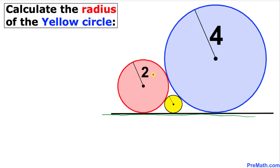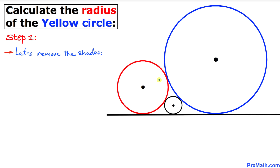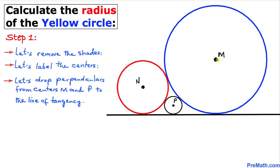Let's get started with our solution. We'll remove the shades to make things simple. Here are our circles without shades. Now we are going to label the centers — the center of the biggest circle is M, the medium circle N, and the smallest circle P. Now let's drop perpendiculars from point M and point P down to the line of tangency. Since these are perpendicular, both angles are 90 degrees.